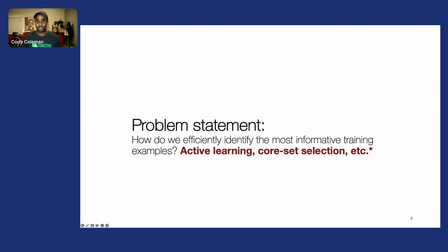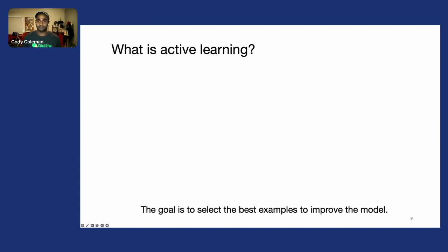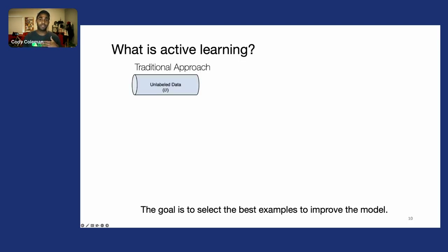However, there's an asterisk when we think about modern big data sites—I'll get to that in a minute. First, what is active learning? The goal of active learning is to select the best examples to improve model quality. This is done through an iterative process where we start with a large amount of unlabeled data, and then take a small subset to label.